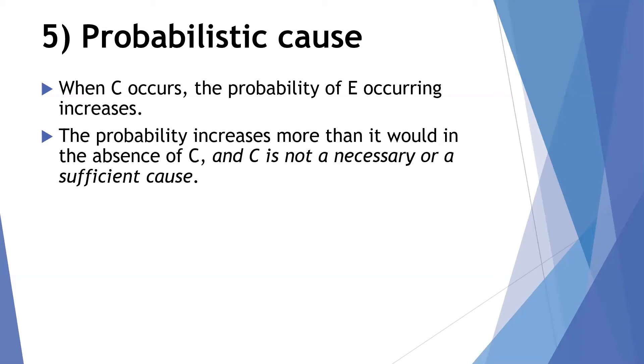C is not a necessary or a sufficient cause. So sometimes you might, technically, a cause might fit into our definition of a necessary cause or even sufficient cause, and it would increase the probability that E would occur. But if we can identify it as a sufficient cause or a necessary cause, that is a more clear type of causation. And so we should use it, put it into those two, one of those two categories if it fits there.